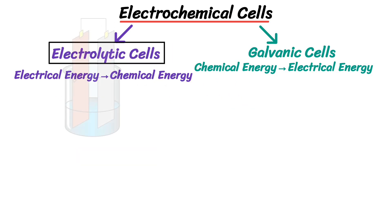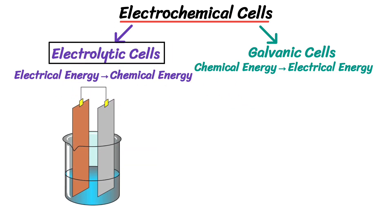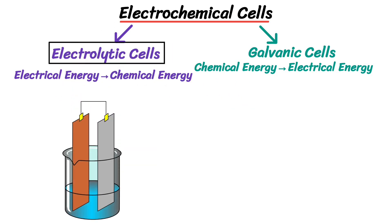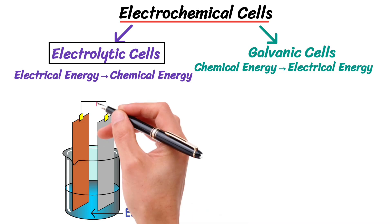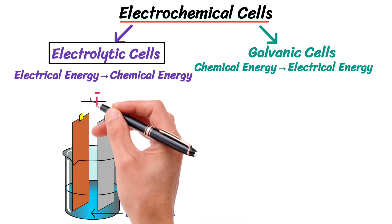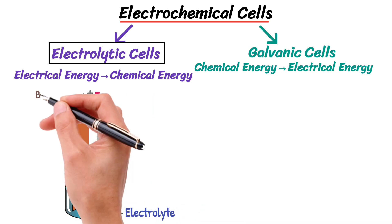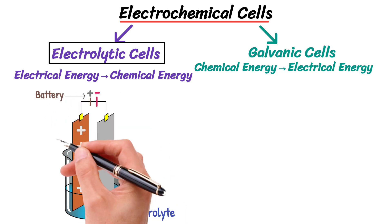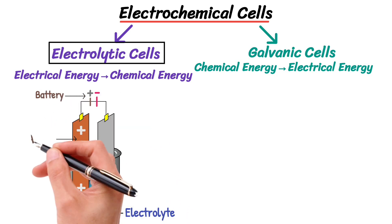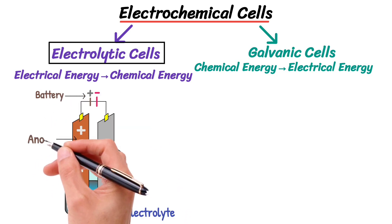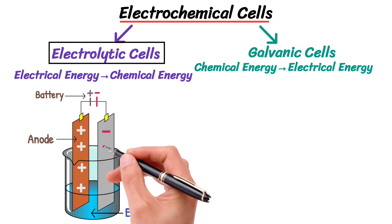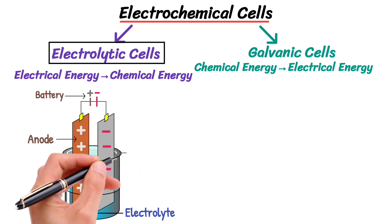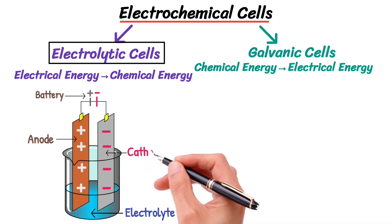An electrolytic cell consists of two electrodes dipped in a solution known as the electrolyte, and both electrodes are connected to a battery. The electrode connected to the positive terminal carries a positive charge and is called the anode. The electrode connected to the negative terminal carries a negative charge and is called the cathode.